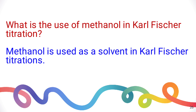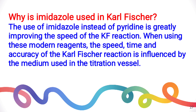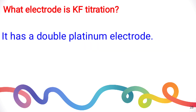What is the use of methanol in Karl Fischer titration? It is used as a solvent. Why is imidazole used in Karl Fischer titration? First, pyridine that was used before is carcinogenic in nature, and that is why it is replaced by imidazole. Second, the speed, time, and accuracy of the Karl Fischer reaction is influenced by the medium used in the titration vessel. What electrode is used in KF titration? It has a double platinum electrode for the purpose of accuracy.